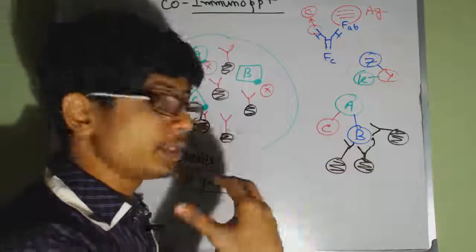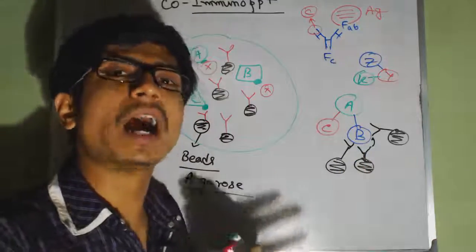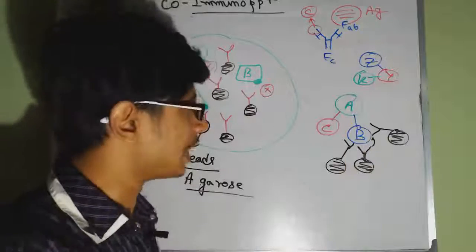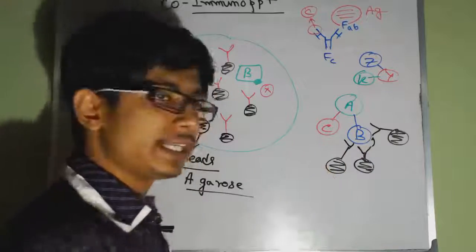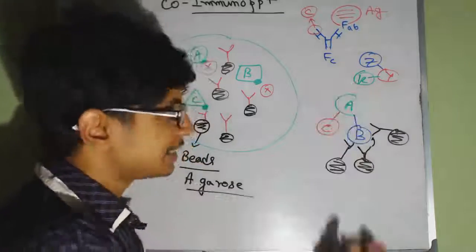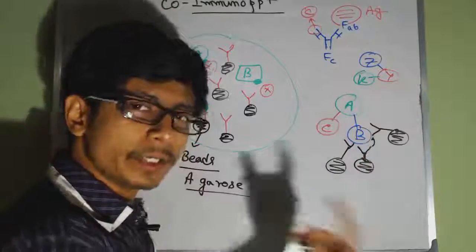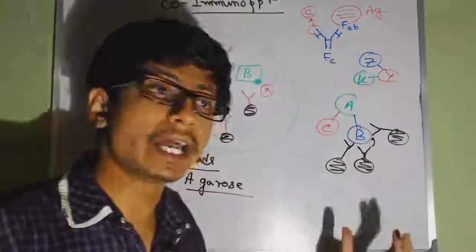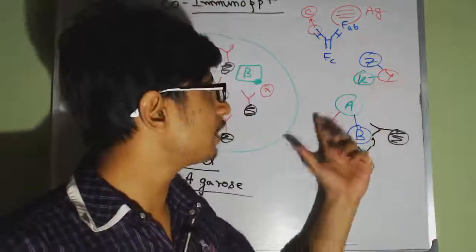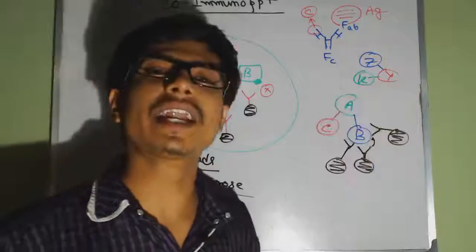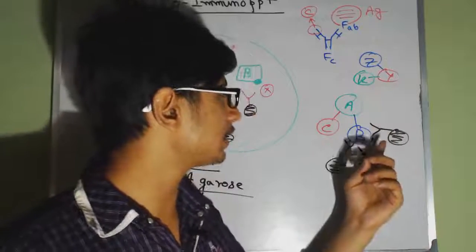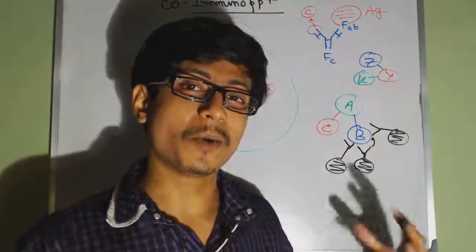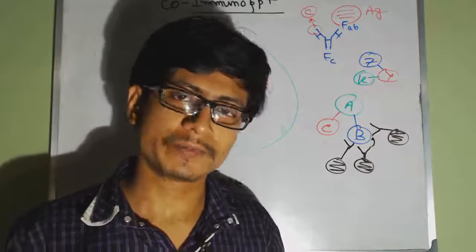We know a protein is in the pathway but don't know exactly how it interacts. Say that protein is B — we design an antibody against B, it binds and precipitates the complex. Then we design an antibody against C, which precipitates the A-B-C complex again. We do the same for A. Every time, with each specific antibody, the same complex of three proteins precipitates. This confirms that these three proteins are interacting with each other.